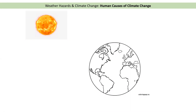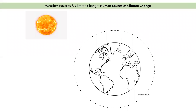Before we begin, we need to understand again what we mean exactly by climate change. So here we've got the earth and here we've got the Sun. The earth has something around it called an atmosphere — the best way to think about it, it's a bit like a bubble of gas that surrounds the earth, a big bubble of various different gases.